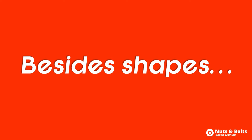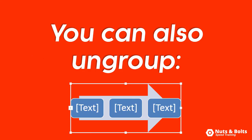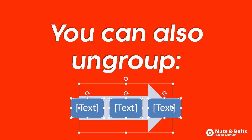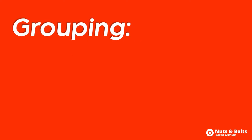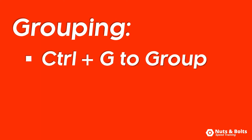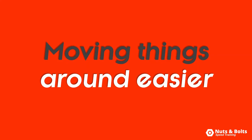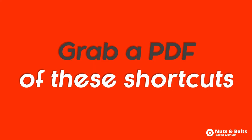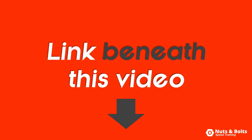Now besides ungrouping normal PowerPoint shapes, you can also ungroup SmartArt graphics, which breaks them down into individual pieces, and you can also ungroup vector graphics that you buy or download from the web. So those are your grouping shortcuts: Ctrl+G to form a group and Ctrl+Shift+G to break a group apart, which makes moving objects around on your slides a lot easier. To grab a PDF of all of these awesome shortcuts plus over 100 more, look for the link beneath this video.